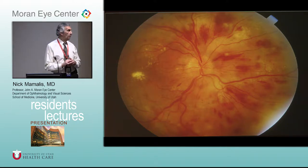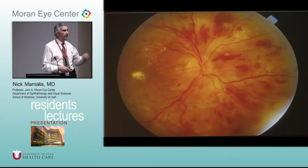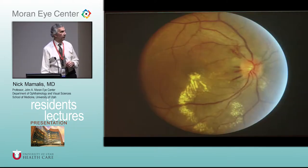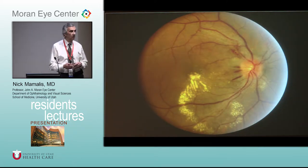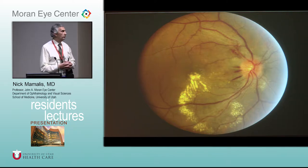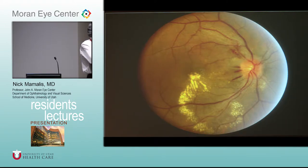What could be the etiology? This could be hypertensive — that could also be severe diabetes because diabetics can get a picture like this. But this is severe hypertensive retinopathy. When you see this you want to carefully measure the patient's blood pressure. This is another patient with high blood pressure. What are we seeing right here?